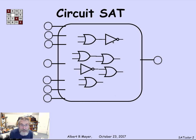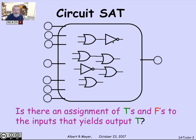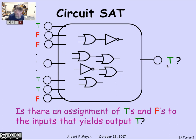The circuit satisfiability problem is that I'd like to know: is there a way to assign truth values to those inputs so that the output becomes true? Is there a way to set the inputs — first one to true, the next one to false, and so on — such that the circuit produces output true? If there's a set of inputs like that, they would be called a satisfying set of inputs. In terms of formulas, this means a truth assignment to the variables that leads the formula to be true. That's the circuit SAT problem.